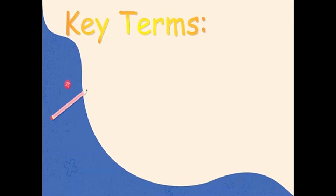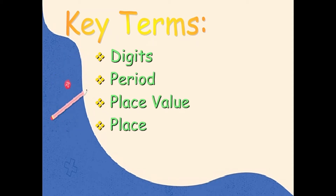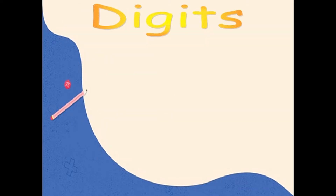Key Terms. These are the key terms to remember: digits, period, place value, place, and value. We will be discussing each term one at a time, and we will begin with digits.